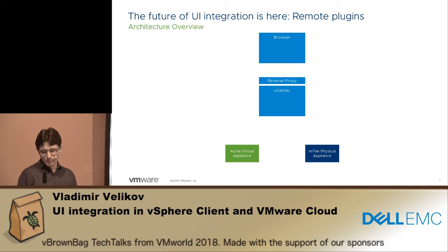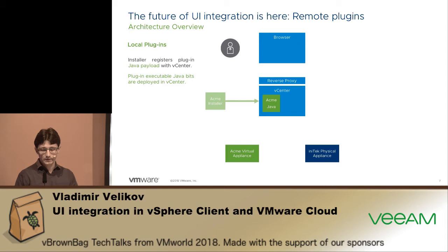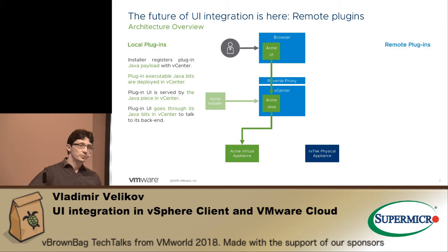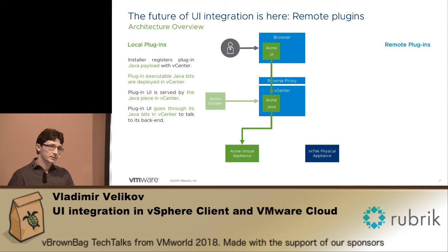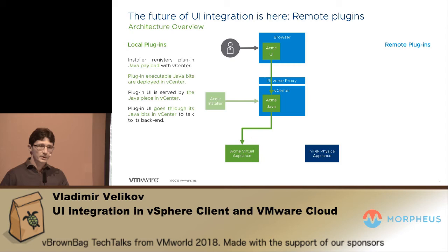You have more or less the same picture. On the left you have the local plugin with the partner appliance and partner installer. The Java service is deployed from the appliance and the UI is served from this Java bundle. In the opposite direction the UI communicates with its backend through the same Java bundle, so in essence this Java middle layer acts as a kind of proxy — in the simplest scenario, though sometimes it requires more complicated routing logic, especially with multiple vCenters.